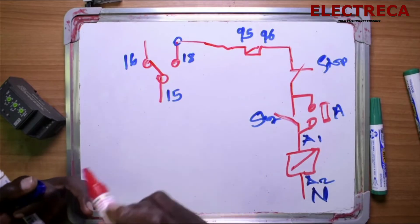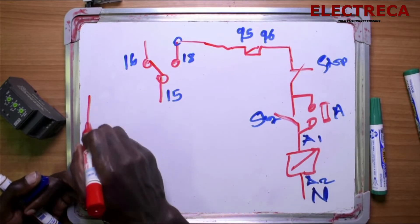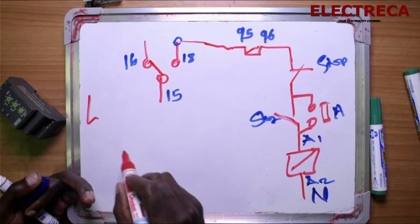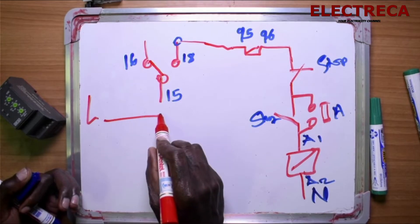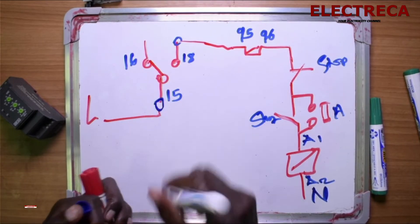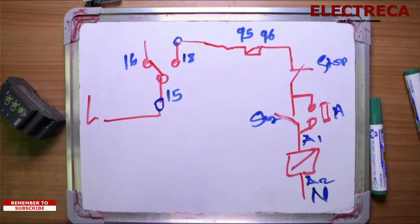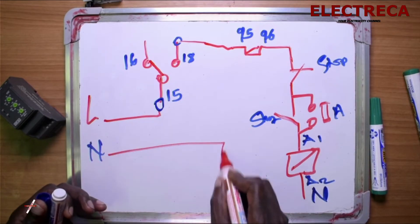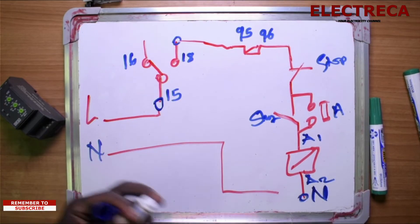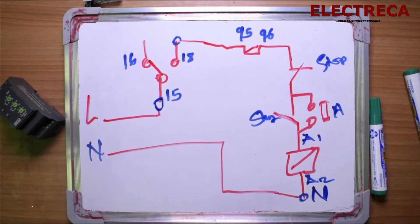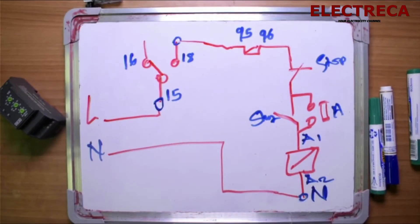Now our L contacts, you remember you have L, so we'll come here like that. And then we have our N here, just in case your control is a single phase.